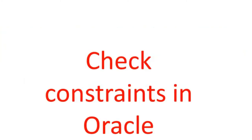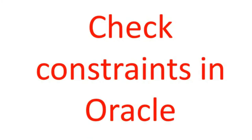Hello everyone, today we are going to learn how to create check constraints in our app. So what is a check constraint? A check constraint is a type of validation given on a particular field in a table. Suppose you want to create a numeric field and you want to put a validation that a user cannot enter a value less than 10,000, or you can create a validation that age cannot be greater than 70 or 80.